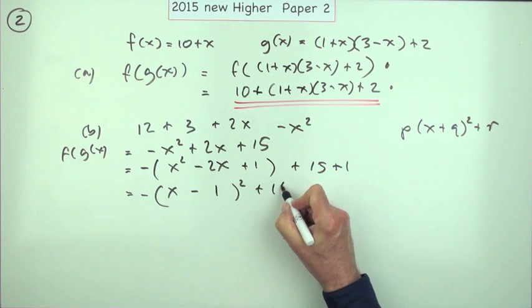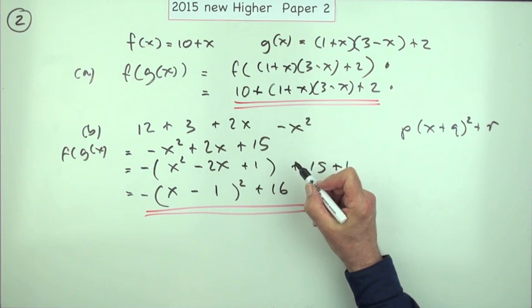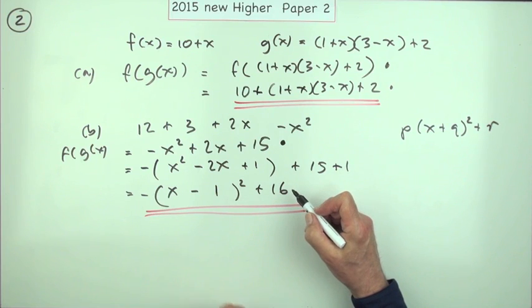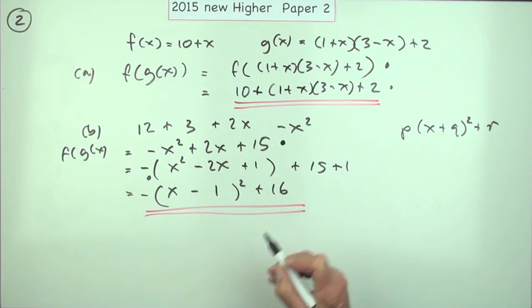I didn't mention the marks there at all. So the marks were obviously 1 for tidying it up, the next one for knowing how to deal with that negative, just taking it out and producing these two parts. I'll put that here. And the third one was finally getting the 16.